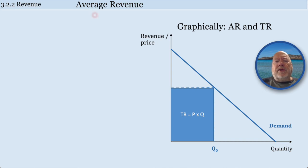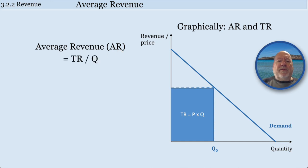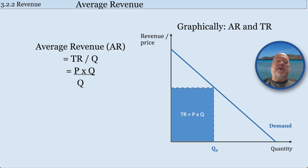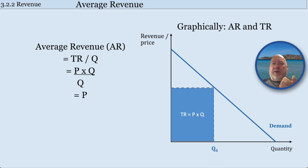We also need to be able to work out the average revenue. Given that average revenue is simply the total revenue divided by the quantity — so that gives you the average revenue for one product — and total revenue is P times Q, then you can cross out the two Qs, and average revenue is always equal to the price. In other words, the price of the good per unit is the average revenue.